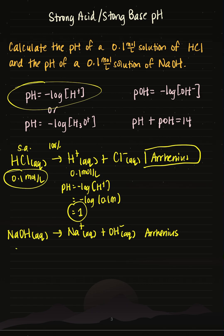What about the pH of a 0.1 mole per liter solution of NaOH? NaOH is a strong base, so it will also fully dissociate into its ions. So if I have 0.1 moles per liter of NaOH, I also have 0.1 moles per liter of OH minus.